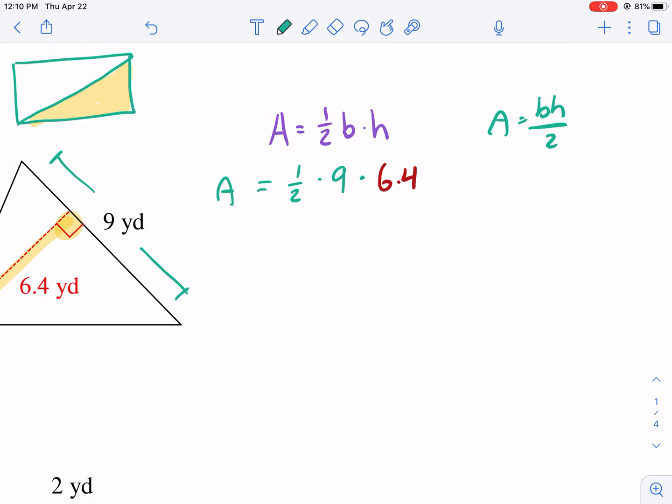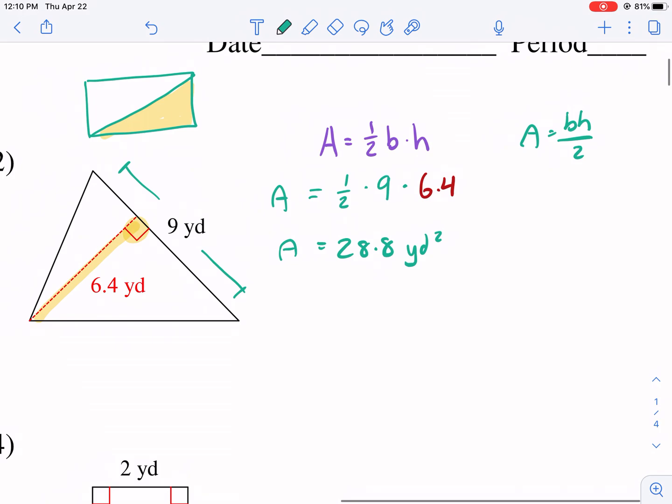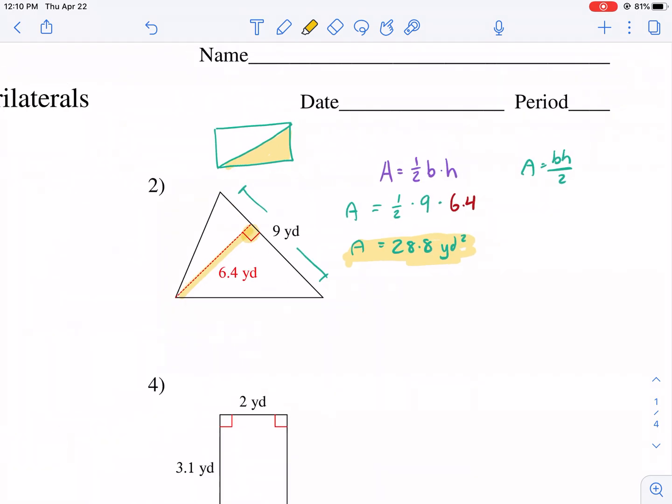Now we're just going to go ahead and multiply straight across. So we have 0.5, which is the same thing as one half times 9 times 6.4. And we get 28.8. And make sure you include the units, which is a yard squared. Area is square units for the measurements of area. So that's our answer there.